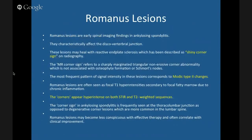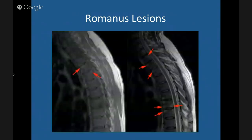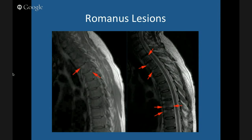A Romanus lesion is seen in ankylosing spondylitis — it's the 'shiny corners' sign, one of the early MRI signs of ankylosis. There's classic end plate enthesitis right at the corners, where you get inflammation and eventually erosions. On MRI this appears as bright signal at the corners of the vertebral body end plates. It can look like fat or fluid — it's typical for ankylosing spondylitis.